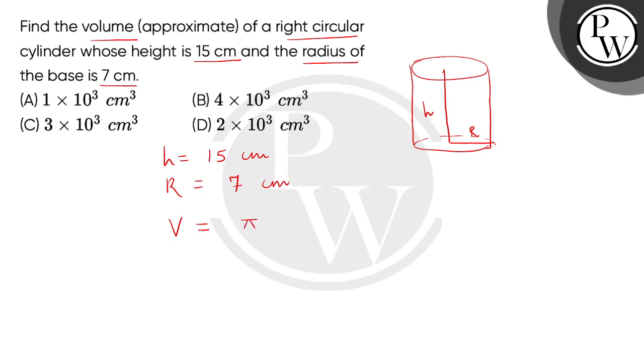So volume का expression आता है pi r square h. अब जो values पुट करेंगे, pi की value है fraction form में 22 by 7.